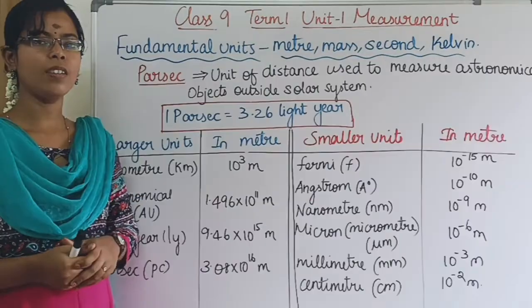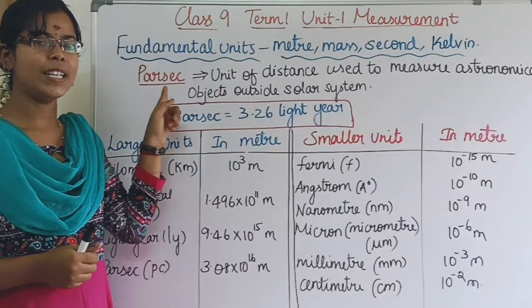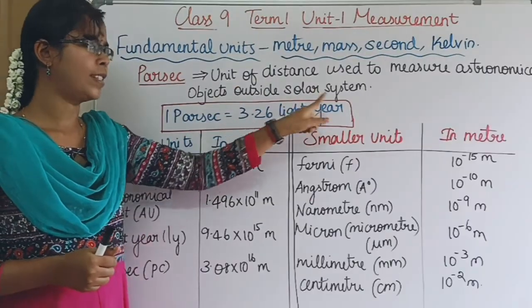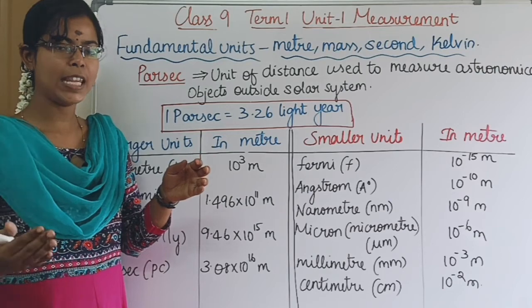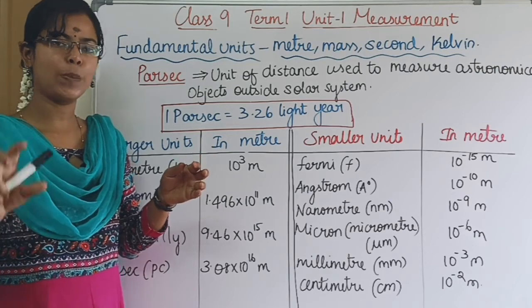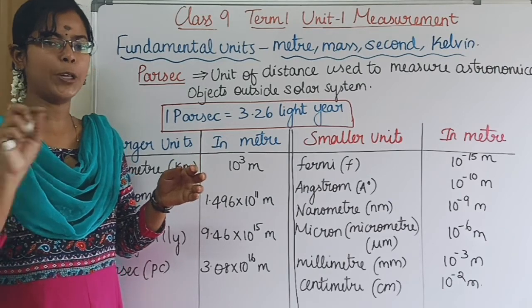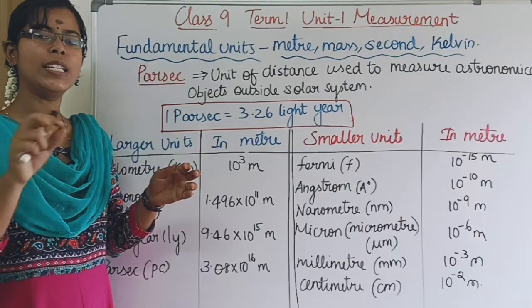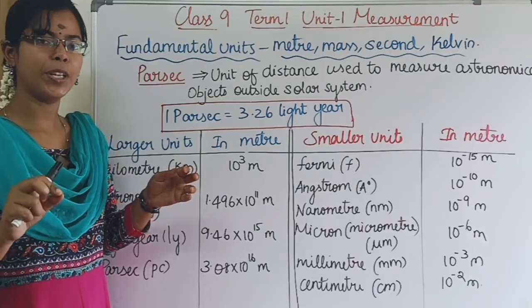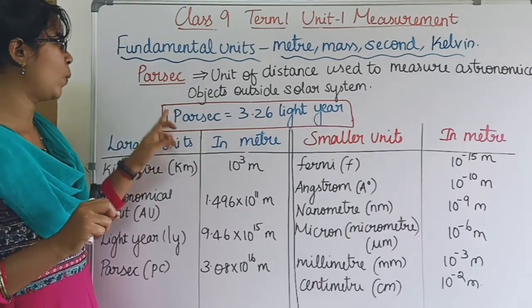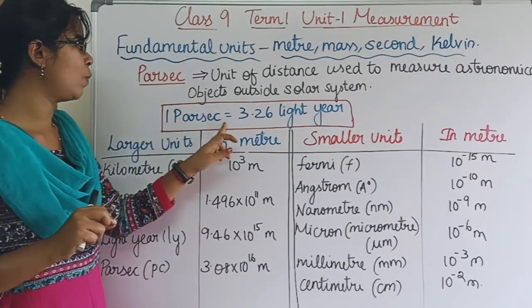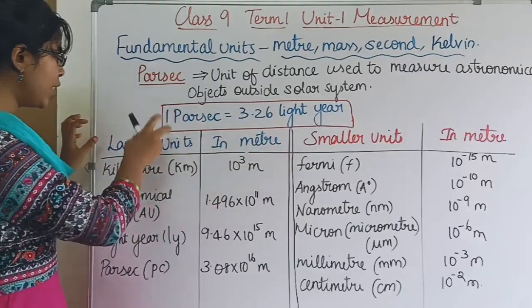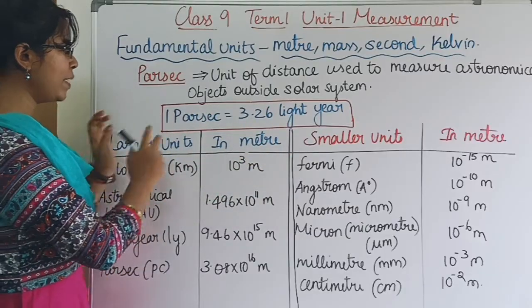Parsec is used for distances outside the solar system — that is, for astronomical objects. 1 parsec is equal to 3.26 light years. The large units and small units are all expressed relative to 1 meter.